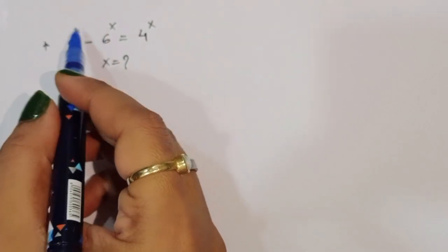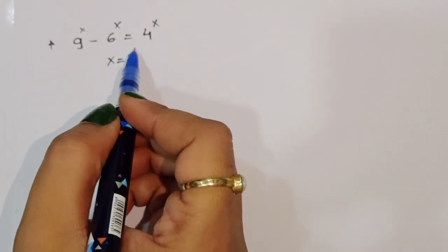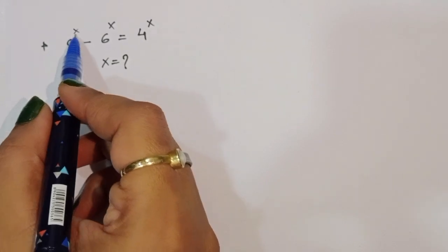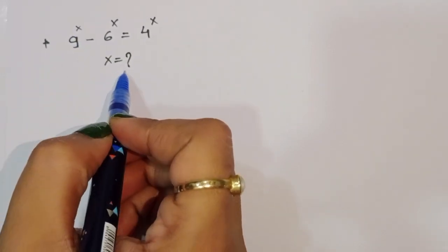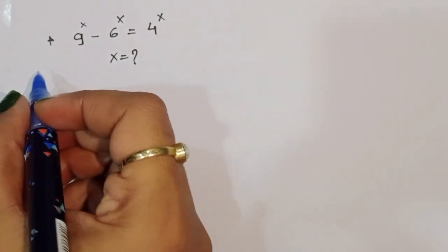The question is: given 9^x minus 6^x is equal to 4^x, we have to find out the value of x. Let's see the solution.